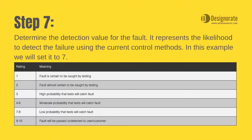Step 7: Determine the detection value for the fault. It represents the likelihood to detect the failure using the current control methods. In this example, we will set it to 7.